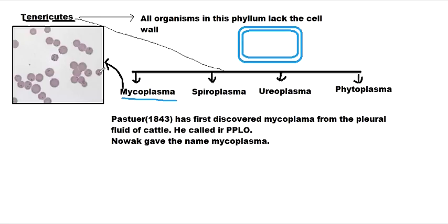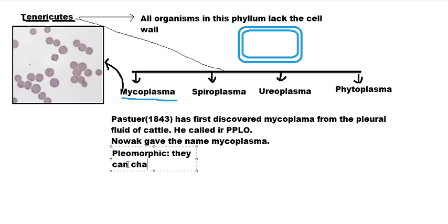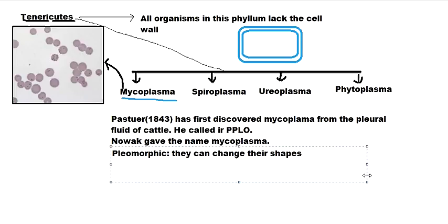Another very important point is that due to the lack of cell wall, they don't have rigidity, so they can just change shapes. They are therefore called pleomorphic — 'pleo' meaning many and 'morphic' meaning many structures — meaning they can change their shapes.